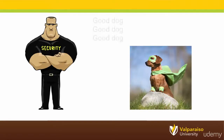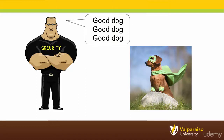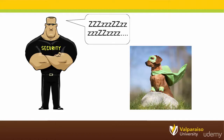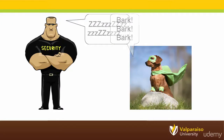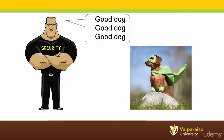The guard is instructed to keep telling the watchdog that everything is okay. This way if the guard were to fall asleep, the watchdog would know that something is wrong and would begin to bark. All the barking would wake up the guard, who would start over.